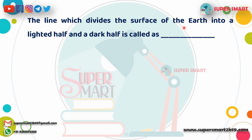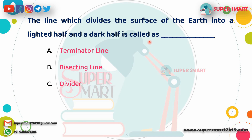Next question: The line which divides the surface of the Earth into a light half and a dark half is also called what?